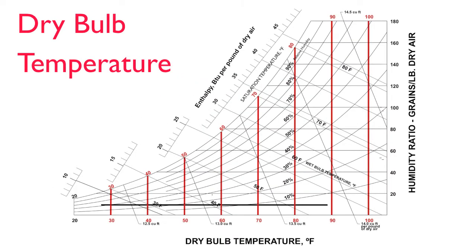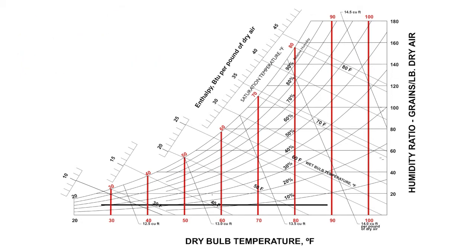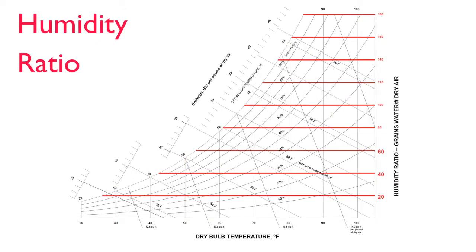Dry bulb temperature runs along the x-axis and is indicated by the evenly spaced vertical red lines. Humidity ratio runs along the y-axis and is indicated by the evenly spaced horizontal red lines.